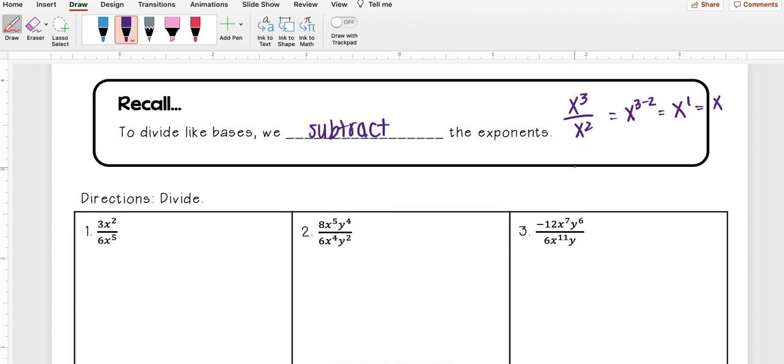But then if you also recall, if I have the bigger number on the bottom, so let's say I had x to the fourth over x to the seventh, I would still subtract them. So I do 7 minus 4 to get 3. But since my bigger exponent's on the bottom, my base will stay on the bottom.